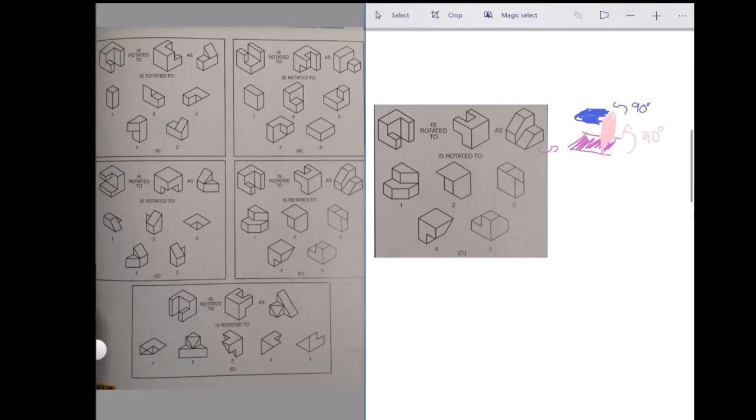So, that means that 2 and 4 are the only possible candidates for the right answer. Now, which one's the correct answer? Well, remember that this is a vertical rotation. So, that square should still be on the front. And, 2 is the only one that has the square on the front. So, therefore, 2 would be the right answer.